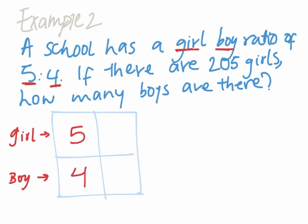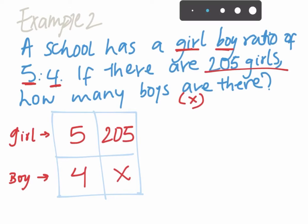The second information, which is a question, says if there are 205 girls, so 205 girls, how many boys are there? That's the unknown, you're going to put it there, and like I said, you're just going to cross multiply it.